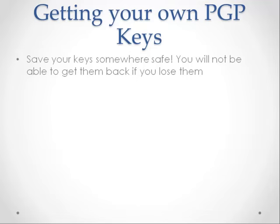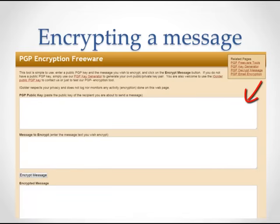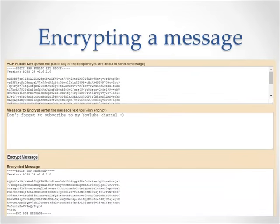Now let's encrypt the message. To encrypt a message, you first need someone's public key. Public keys can only be used to encrypt messages. Go to the following website. Enter the public key of the person you want to send the message to. For this example, let's use our own public key, because we want to send the secret message to ourselves. Enter the message you wish to hide — in this case, it will be: 'Don't forget to subscribe to my YouTube channel.'